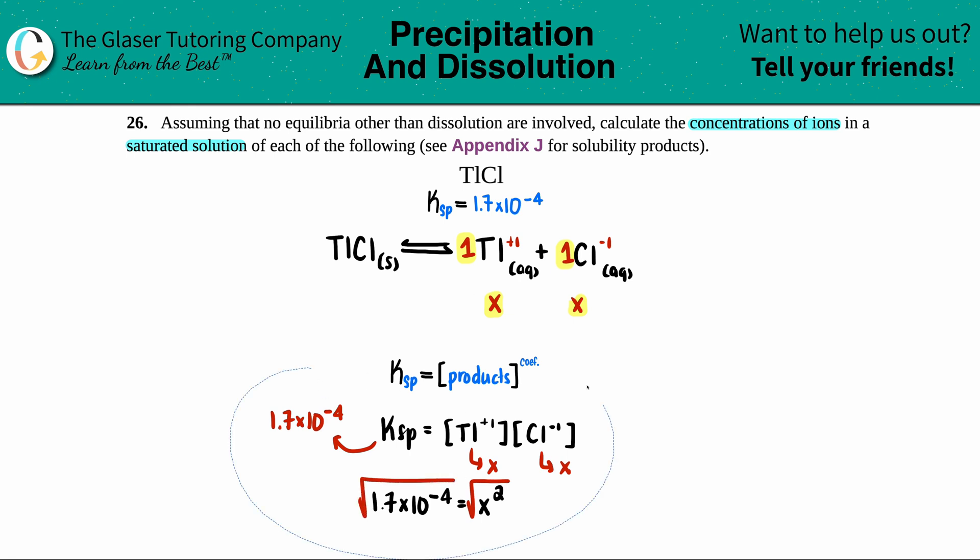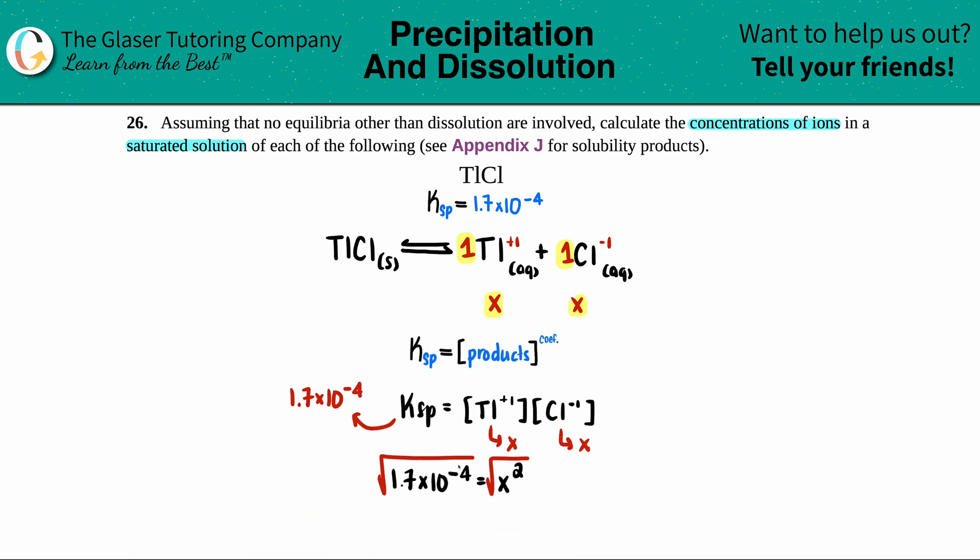I can bring this up a little bit. And I have X equals, let's see, square root of 1.7 times 10 to the negative 4th. And I guess we'll put into scientific notation: 1.3 times 10 to the negative 2nd. And that's molarity.